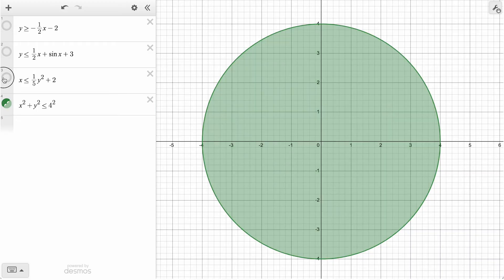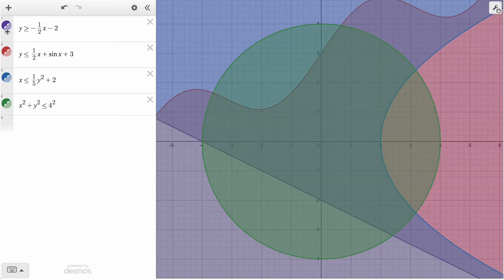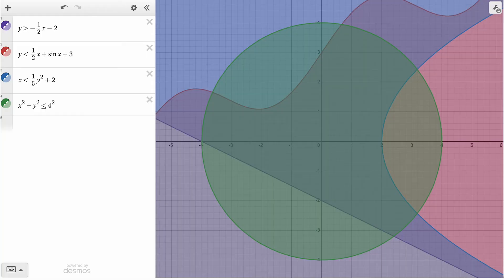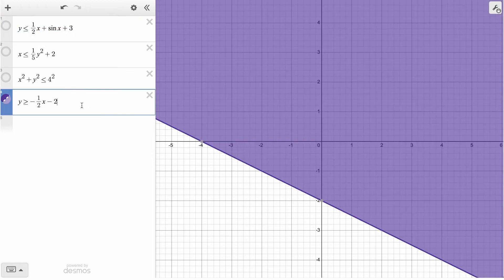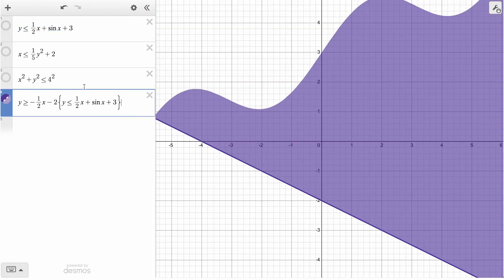While this is already fun design, our last challenge is to shade in only the region they all have in common. As we saw earlier, one strategy is to add each of these expressions as a bracketed restriction after one of the functions. If we take the first line inequality to begin with, we can copy each of the other expressions as restrictions and see how that displays the intersection of all those regions.